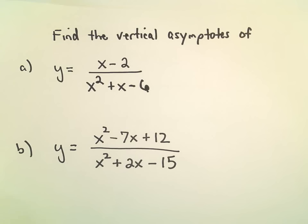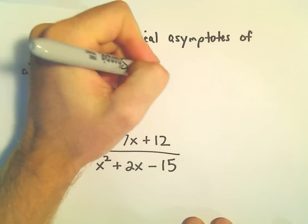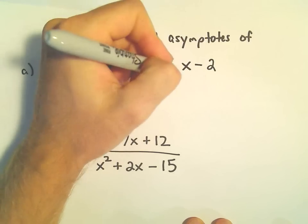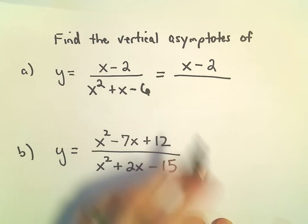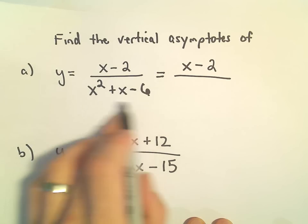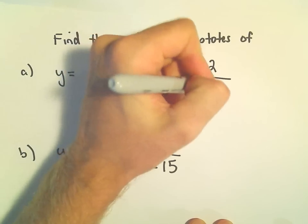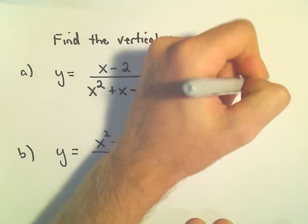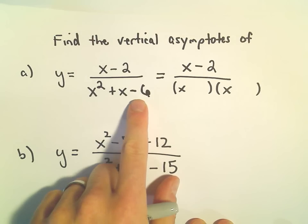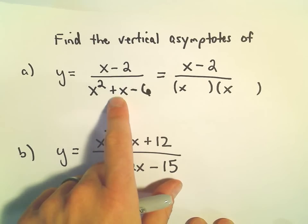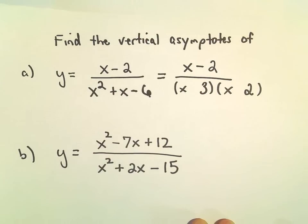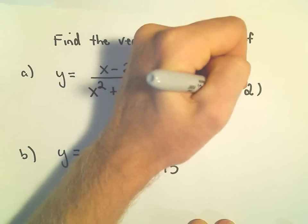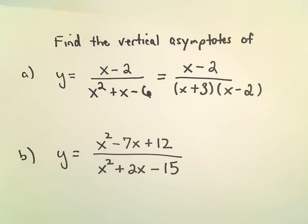We'll do part A here first. Usually what I try to do is I try to factor everything. You could just set the denominator immediately equal to 0 and solve. But if you factor—let's see, so I think the denominator does factor nicely. Two numbers that multiply to negative 6 but add up to positive 1, I think we would need some sort of combination of 3 and 2. And I think positive 3 and negative 2 would do that for us.